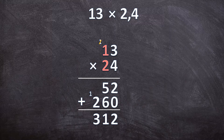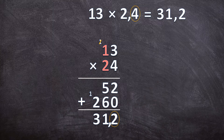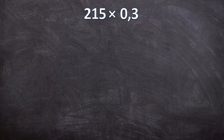We have the answer for 13 times 24, but we need the answer for 13 times 2,4. So we add back the decimal separator at the correct place. Go to the original question — 13 times 2,4 — and count how many digits are to the right of the decimal separator. There is only 1, so in your answer there should also be 1 digit after the decimal separator. Add your comma: the answer for 13 times 2,4 is 31,2.